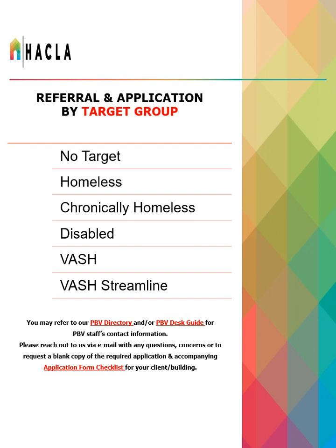Before we begin, I want to point out that other than a question that allows the applicant to clarify any information reported, there aren't really any open-ended questions in the application. Questions are mostly yes or no questions, or very specific questions about a person's housing history, family composition, income, assets, etc. Therefore, we will not be reviewing the application question by question, but rather page by page to gain an understanding of the necessity of each form. If you have questions or comments on any particular item within the application, please email us and we will be happy to provide clarification.